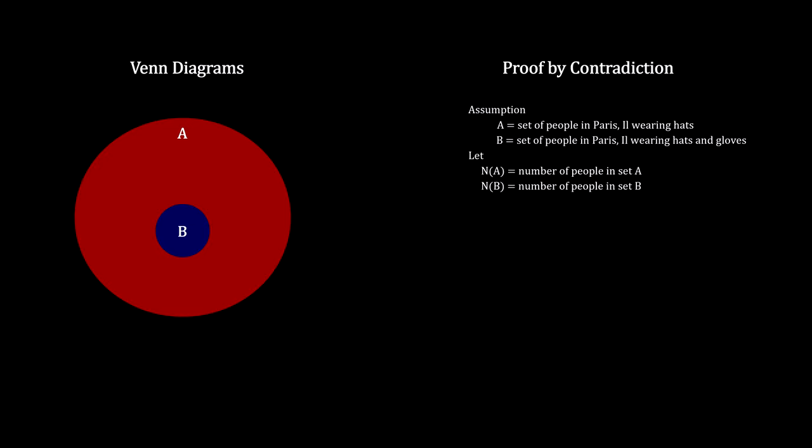Now we count the number of people with hats, and we count the number of people with hats and gloves. If the number of people with hats and gloves is greater than the number of people with hats, you have a contradiction.